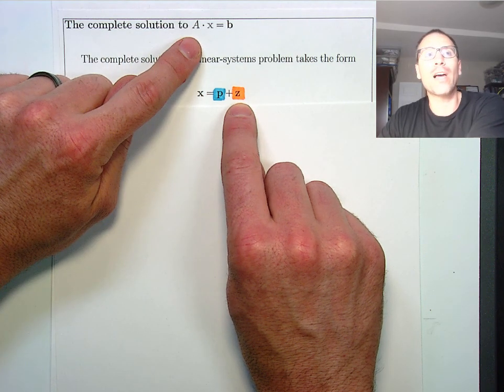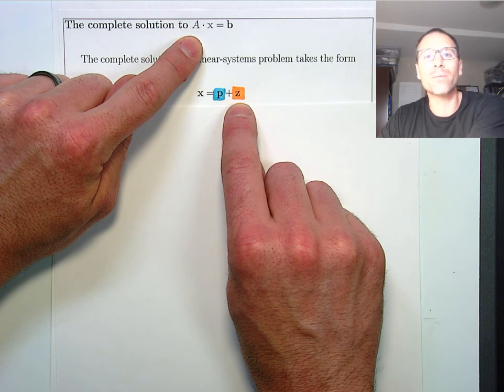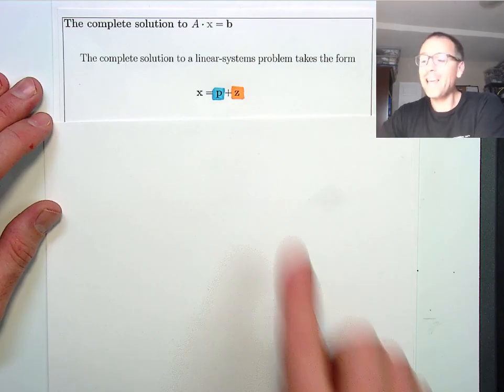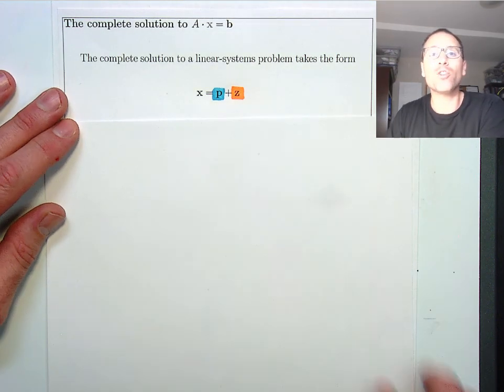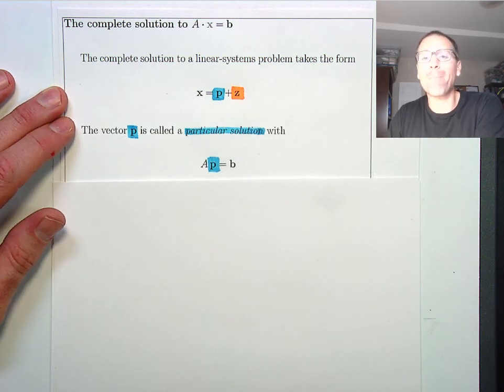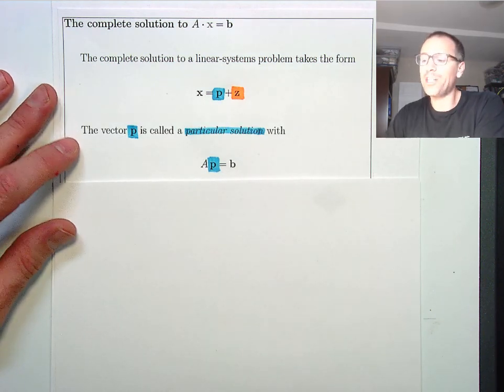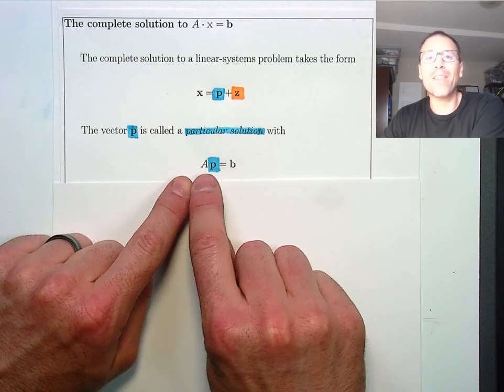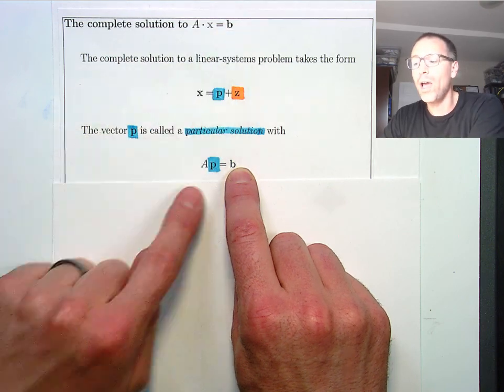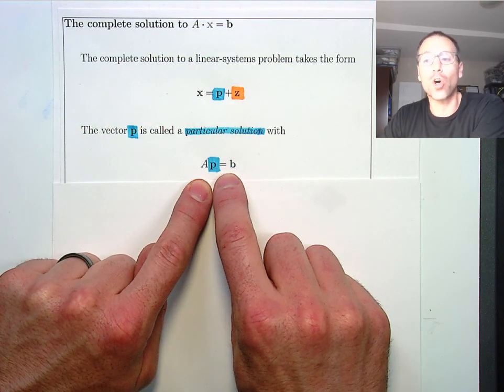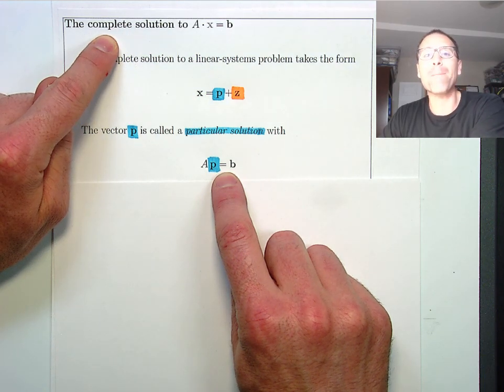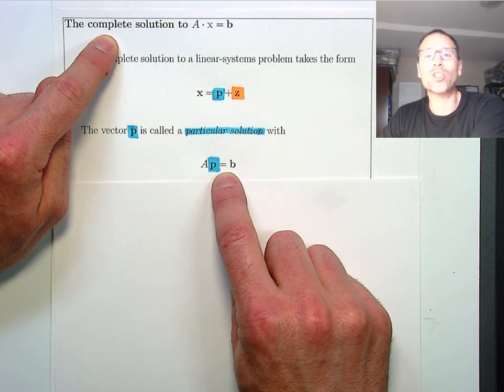So what do the solutions look like to any linear systems? A particular solution plus a zero solution. We give each of those component pieces to the complete solution a very specific name. The vector p we call a particular solution, which means when I multiply p by the matrix A, I get back to the given right hand side. So p for sure solves my original problem. The interesting thing about the adjective complete is p might not be the only vector that solves that problem.